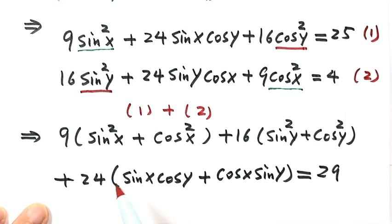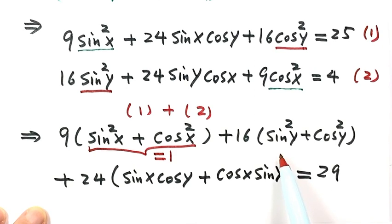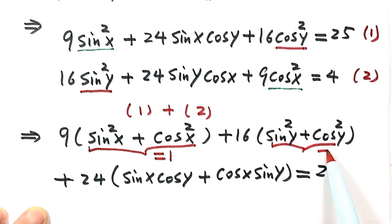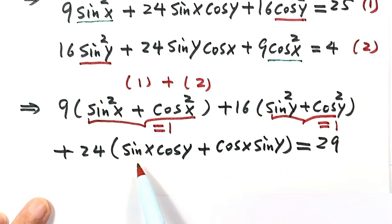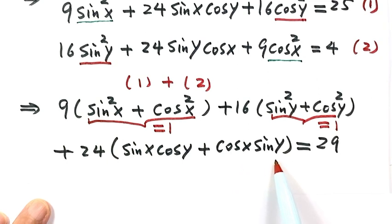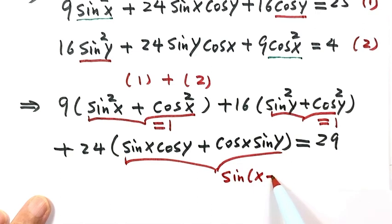Now let's look at the parts inside the parentheses. Based on the trig identity, sin²x plus cos²x equals 1. Same thing: sin²y plus cos²y equals 1. And inside the other parentheses, sin x cos y plus cos x sin y — based on the trig sum-to-product identity, this equals sin(x plus y).